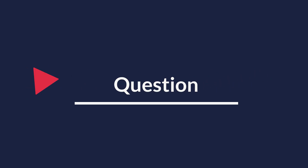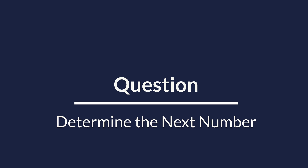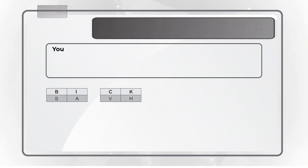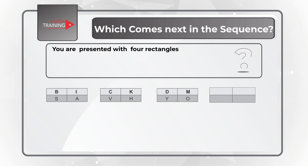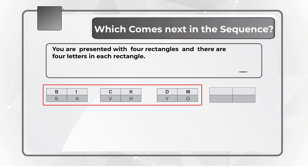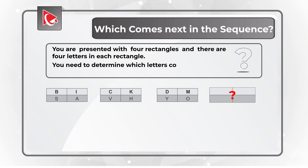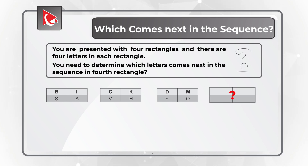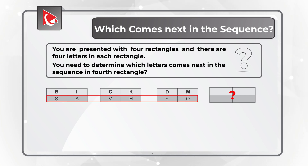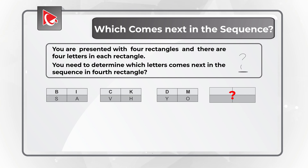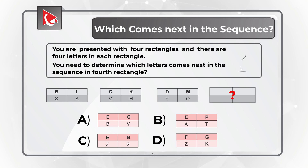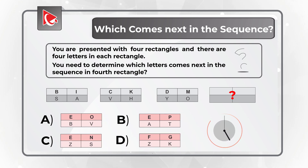Here is one of my favorite questions where you need to determine the next item in the sequence. You are presented with 4 rectangles, each containing 4 letters. Three rectangles contain letters, and you need to determine the letters in the 4th rectangle. The upper row of letters is bold and the lower row is regular font. You are presented with 4 different choices: A, B, C, and D. Take a close look to see if you can determine the answer.